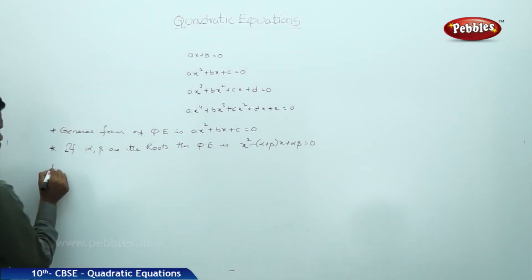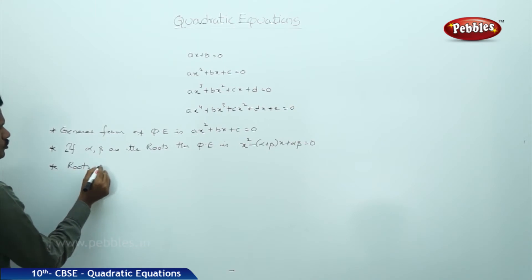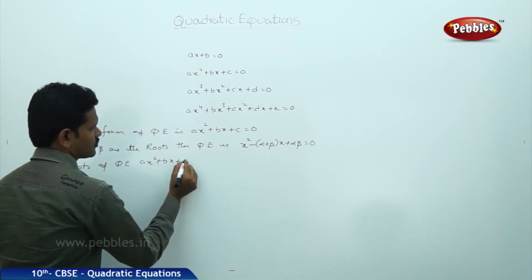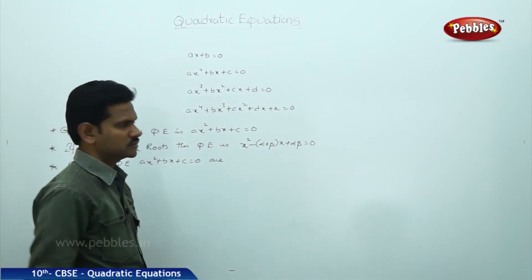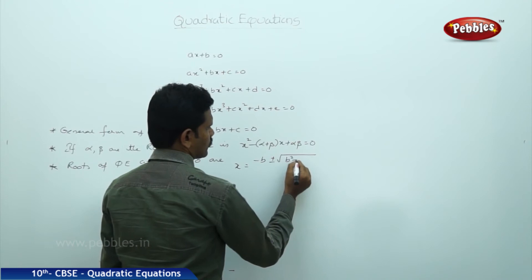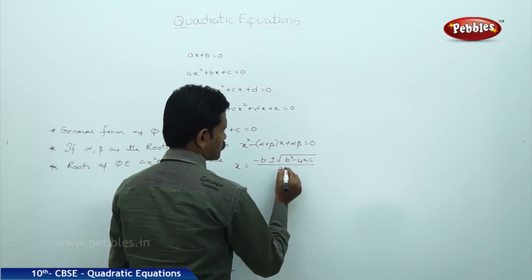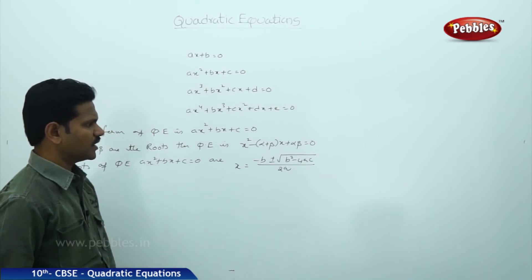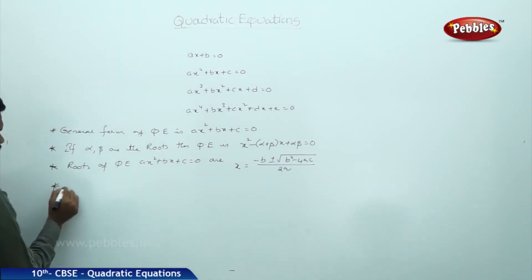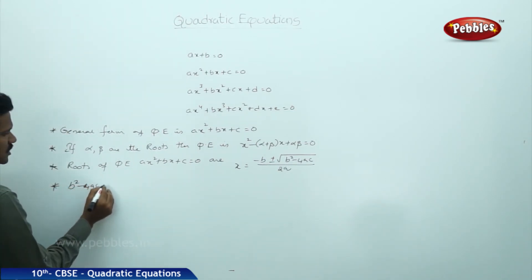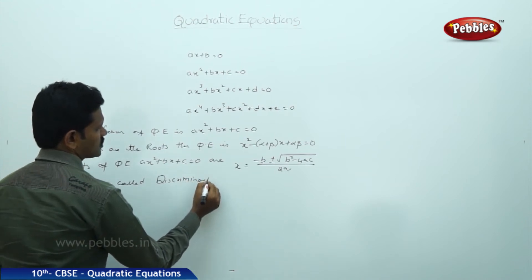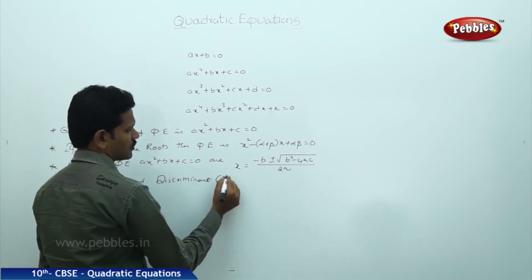The roots of the quadratic equation Ax squared plus Bx plus C equal to 0 are x equals minus B plus or minus the square root of B squared minus 4AC, all divided by 2A. The expression B squared minus 4AC is called the discriminant, represented by delta.